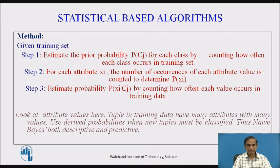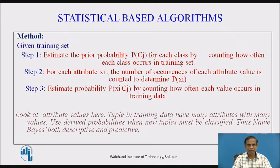The method used here is: given a training set, first estimate the prior probability P(cj) for each class by counting how often each class occurs in the training set. Then for each attribute xi, the number of occurrences for each attribute value is counted to determine P(xi). Then estimate P(xi | cj) by counting how often each value occurs in the training data. The tuples in the training data have many attributes with many values, and each derived probability is used when new tuples must be classified.